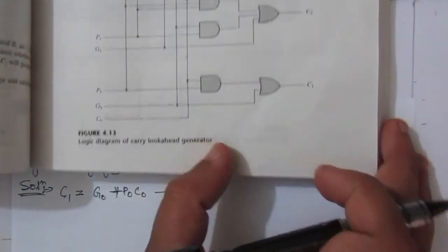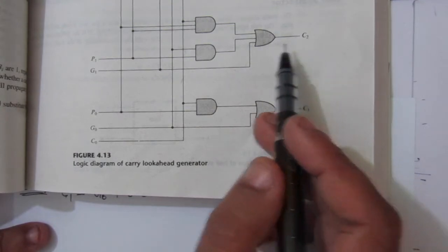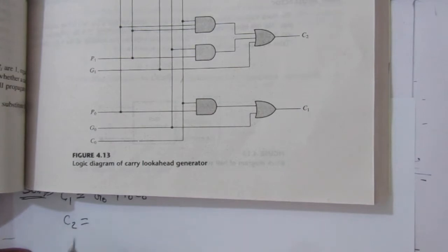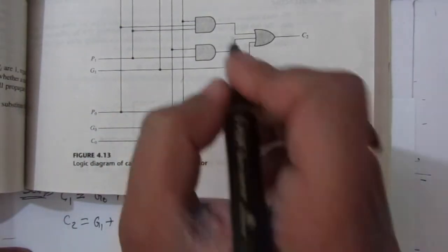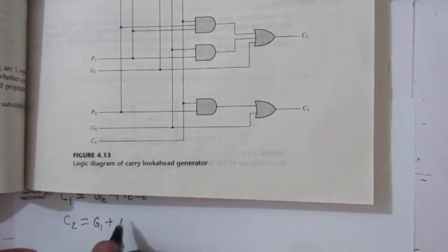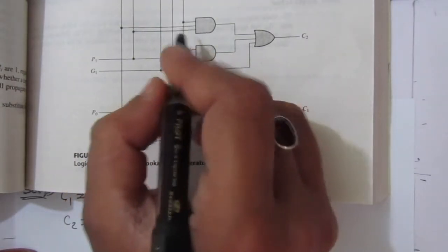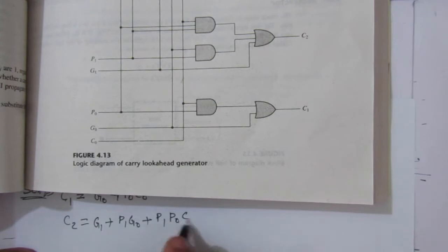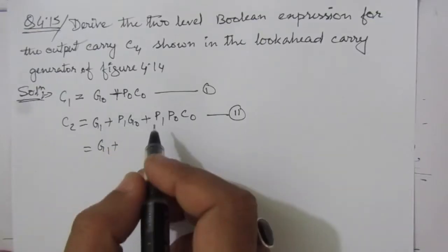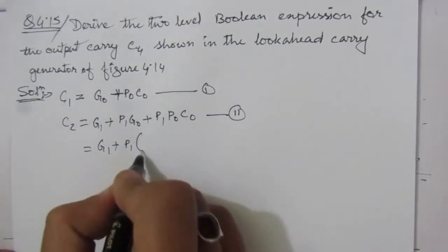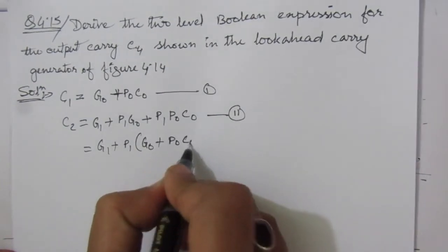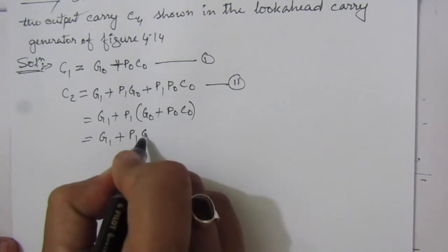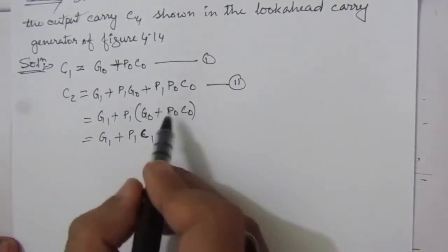Now let us go to C2. C2 is the sum of three terms: G1, plus P1·G0, plus P1·P0·C0. From this expression, we can factor out P1 from the last two terms to get G1 + P1·(G0 + P0·C0). Since G0 + P0·C0 equals C1, we can write C2 = G1 + P1·C1.